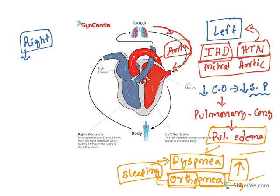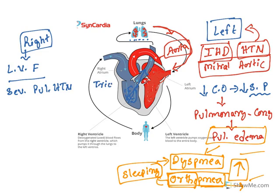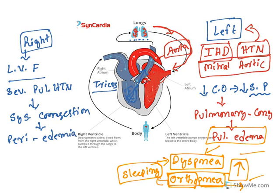Now, right ventricular failure is a consequence of left ventricular failure. When the left ventricle fails, all the blood accumulates in the lungs. The right ventricle pumps its blood into the lungs, but when the lungs are already congested, blood is retained inside the right ventricle, causing ventricular damage and heart failure. Additionally, severe pulmonary hypertension and tricuspid valve problems can also result in right ventricular failure. The consequences include systemic congestion, which results in peripheral edema — the swollen legs — as well as ascites, fluid accumulation.